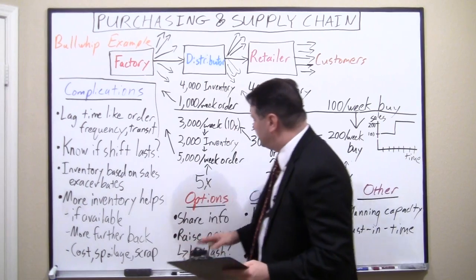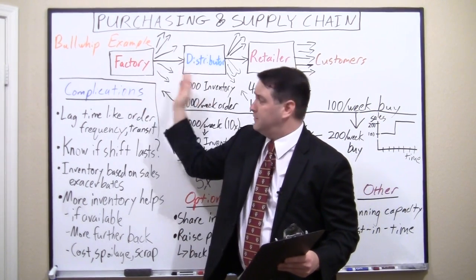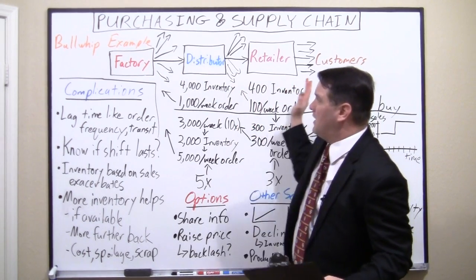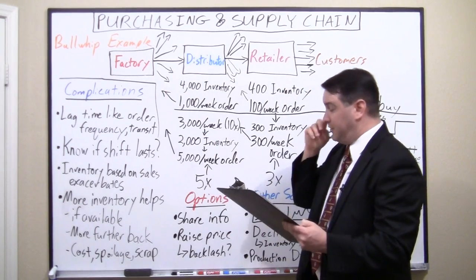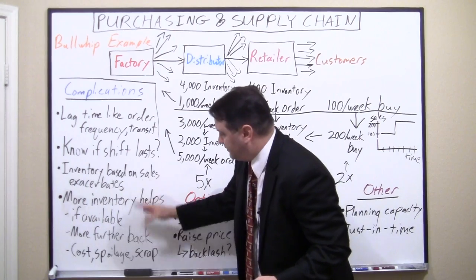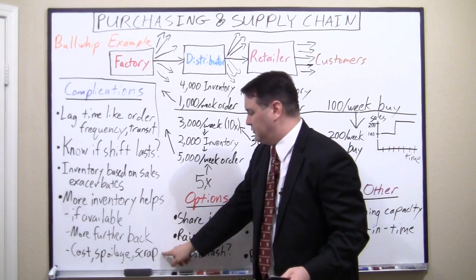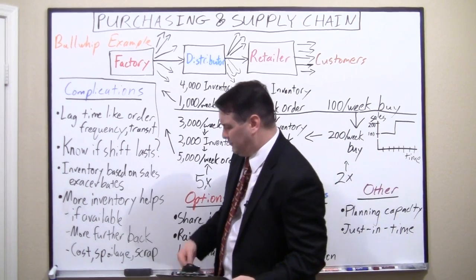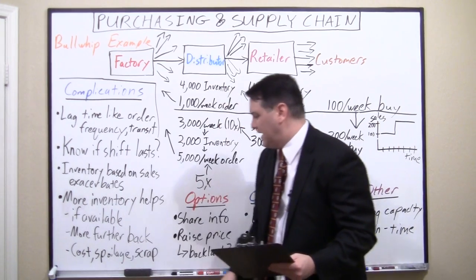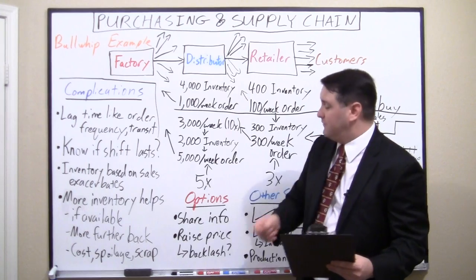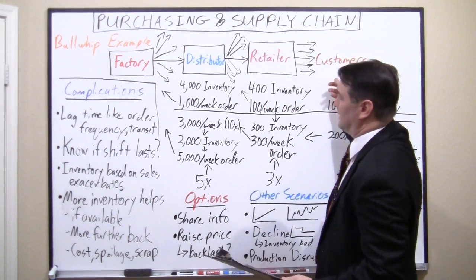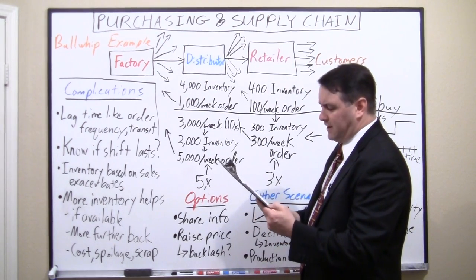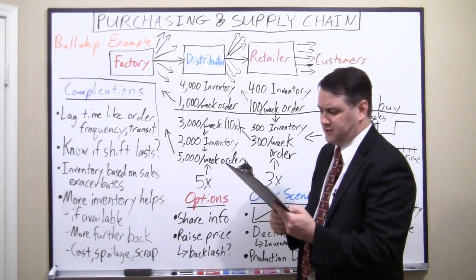Also, because the shock increases in magnitude further back in the supply chain, you need more inventory placed as far back as possible to absorb shocks where they're most pronounced. But inventory has its own costs: capital costs, more capital tied up, more spoilage, and if there's a quality problem at the factory that isn't detected until customers start using the product, having more inventory in the system means more things you'll potentially have to scrap or rework.